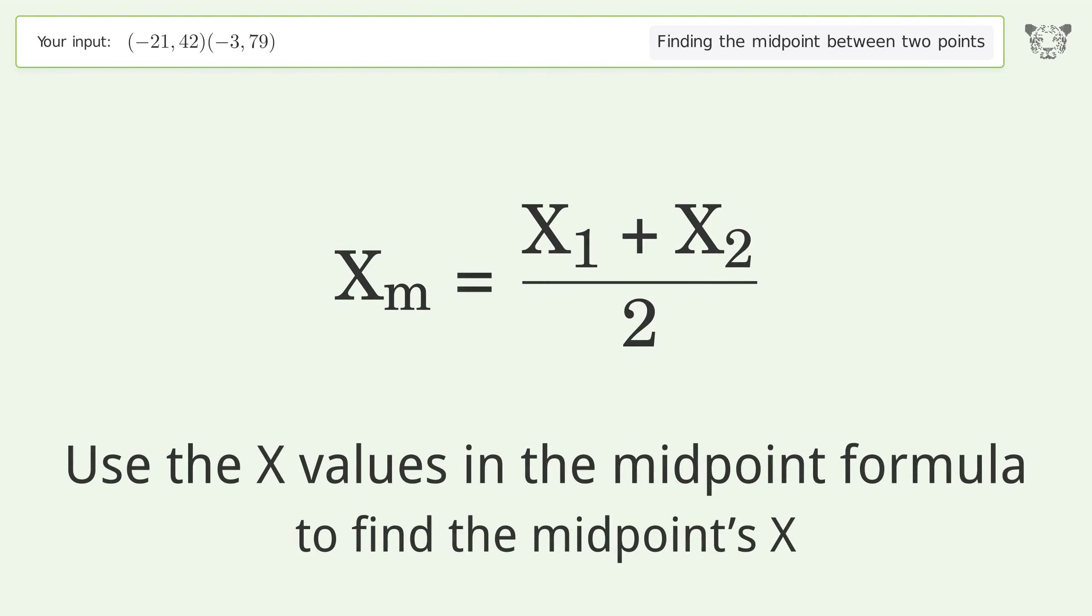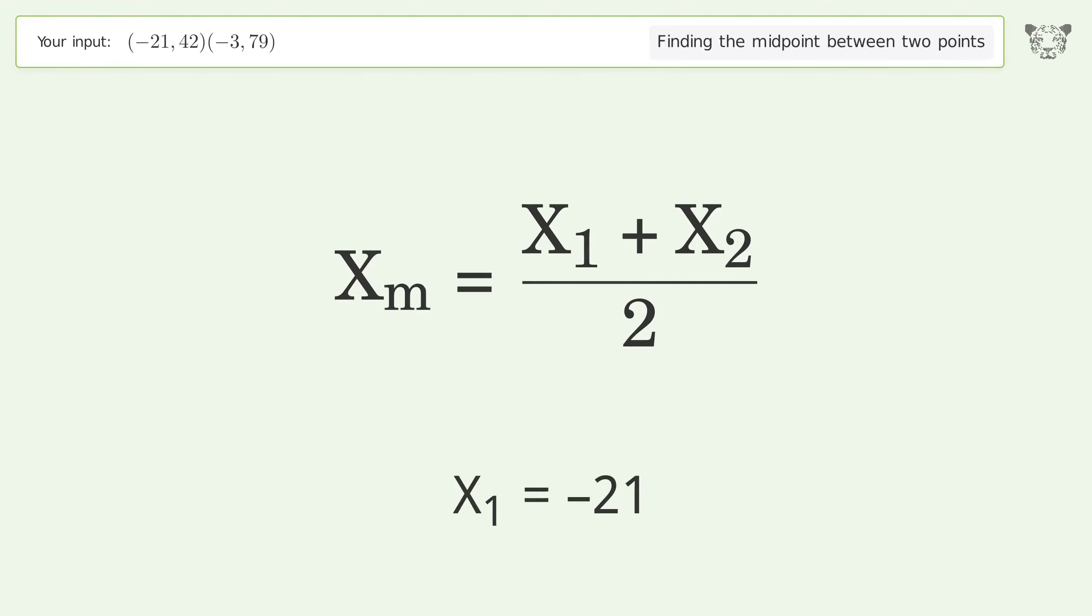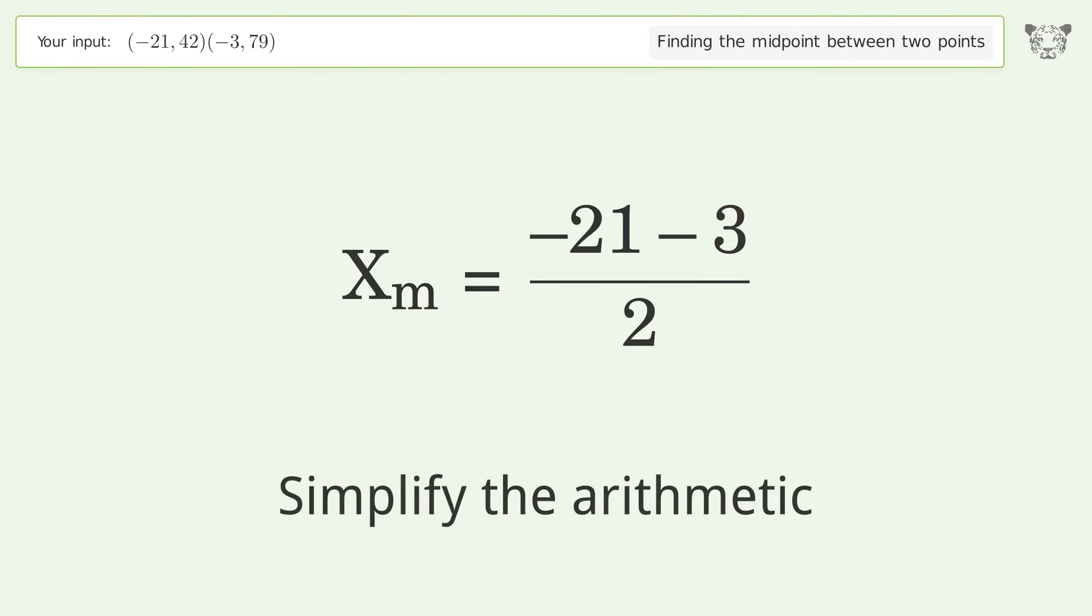Use the x values in the midpoint formula to find the midpoint's x. x1 equals negative 21, x2 equals negative 3. Simplify the arithmetic.